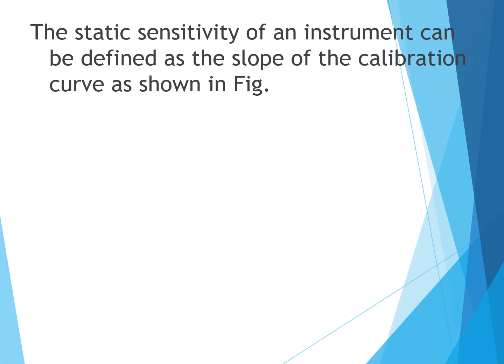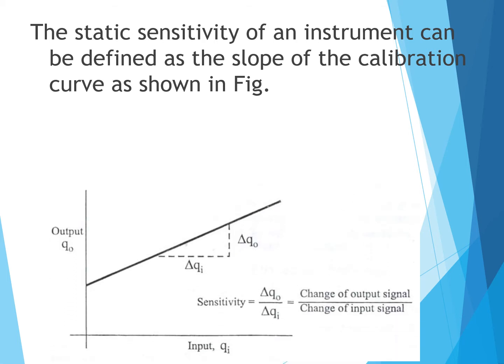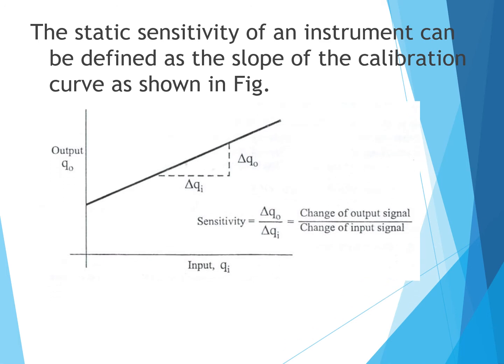The static sensitivity of an instrument can be defined as the slope of the calibration curve. If I plot output versus input on a graph, for a given input I get a corresponding output. When I plot this curve, the change in the y-axis reading divided by the change in the x-axis reading gives me the sensitivity — that is, change in output signal divided by change in input signal, or (y2 - y1) / (x2 - x1).